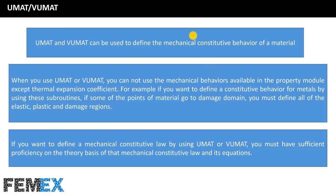Now I want to talk about UMAT and VUMAT. UMAT and VUMAT can be used to define the mechanical constitutive behavior of a material. When you use UMAT or VUMAT, you cannot use the mechanical behaviors available in the property module, except for the thermal expansion coefficient. For example, if you want to define a constitutive behavior for metals and some material points enter the damage domain, you must define all of the elastic, plastic, and damage regions. Writing UMAT or VUMAT requires sufficient proficiency in the theory and equations of the constitutive law, and it is generally not simple.